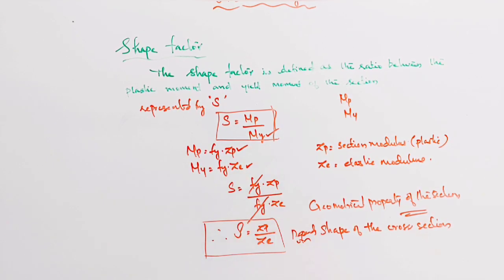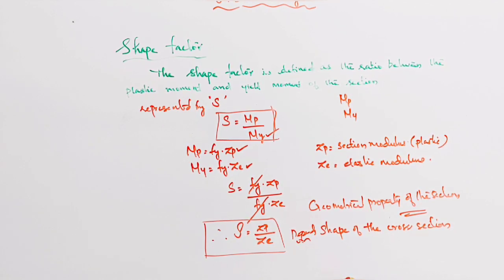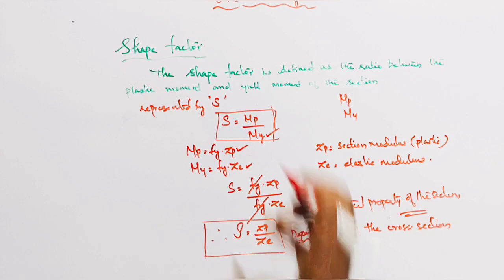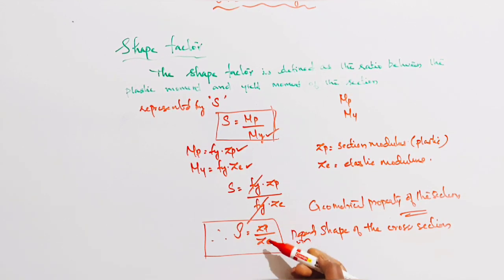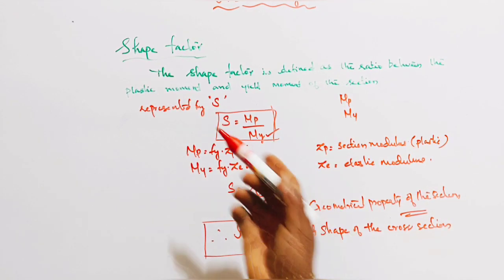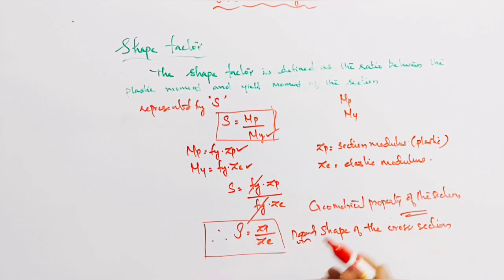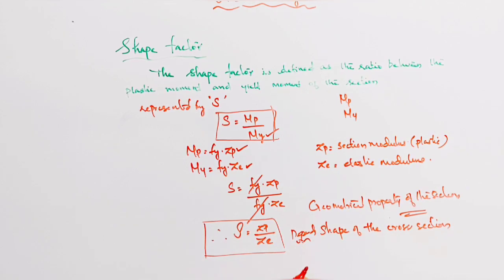For 2-mark or 4-mark questions in KTU University, if the question asks 'What is shape factor?' or 'Define shape factor,' you should say: shape factor is defined as the ratio between plastic moment and yield moment. Substituting, we get S equals ZP by ZE — the ratio between plastic modulus and elastic modulus. S is the geometric property of the section and depends on the shape of the cross-section.